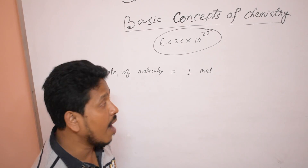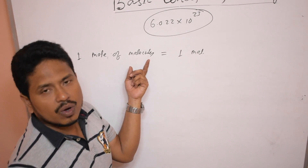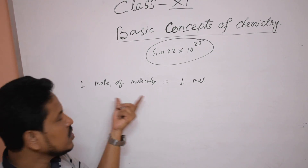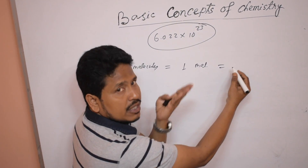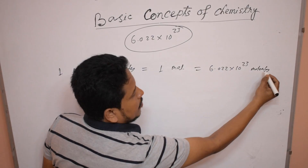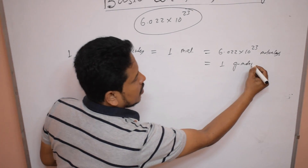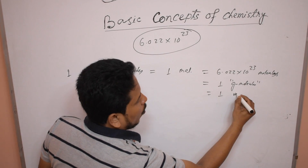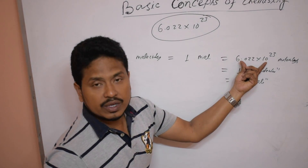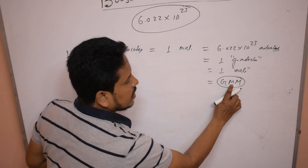In case of atoms or ions, you have to mention one mole of atoms or one mole of ions. But in case of molecules, you can write one mole of molecules or simply one mole — no need to mention the particle, because a molecule is the stable particle formed in nature. So one mole means one mole of molecules, which contains Avogadro's number of molecules. That is also known as one gram molecule, and gram molecular mass is the molecular mass expressed in gram units.